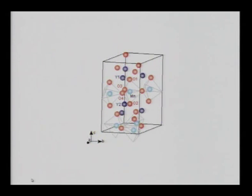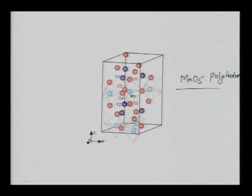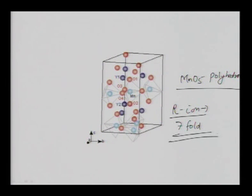The hexagonal structure of these materials — for example YMnO₃ — features MnO₅ polyhedra rather than MnO₆ octahedra as in cubic ABO₃ perovskites. Manganese has five-fold coordination and the R-ion has seven-fold coordination. It is a layered structure with alternating layers of manganese oxide and yttrium oxide.